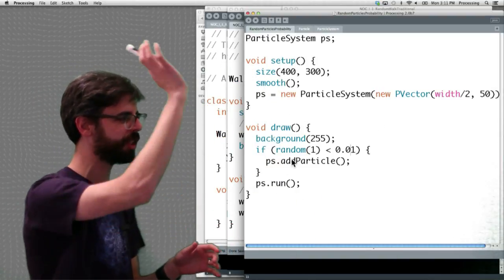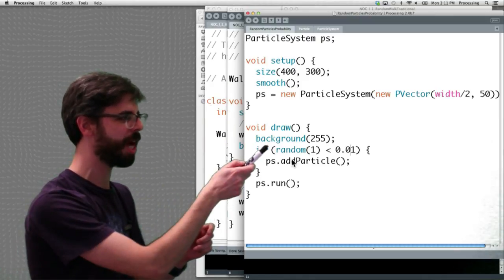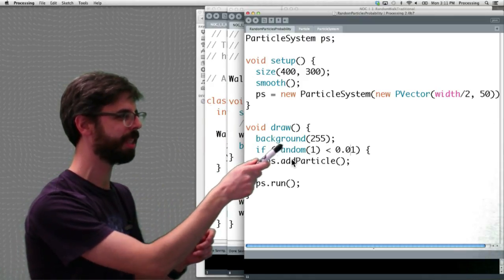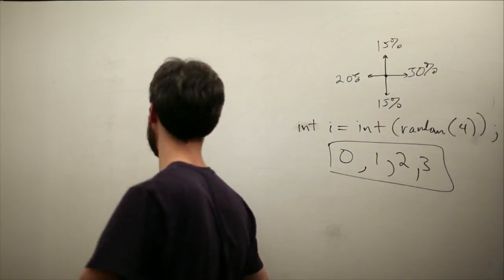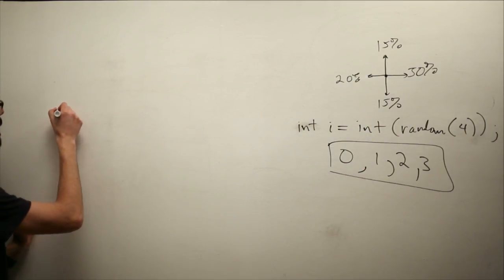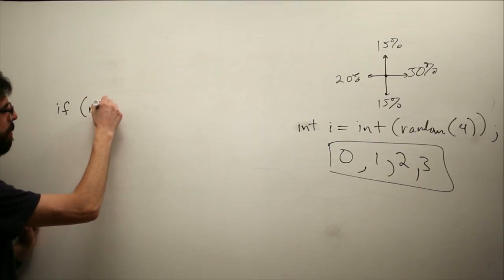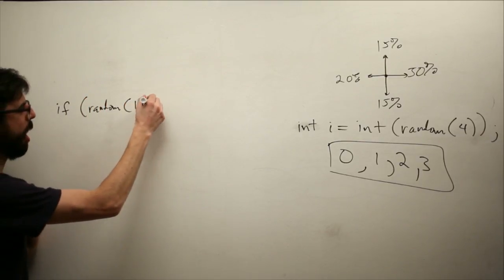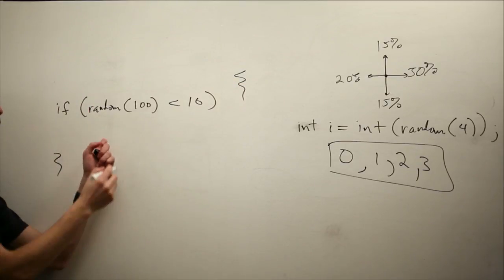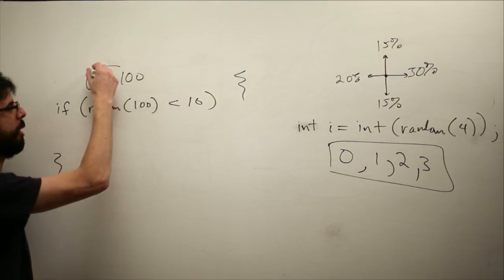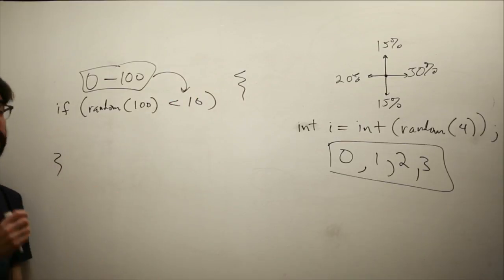Look at this code. Now, we haven't done all this stuff. All this stuff we're going to get later, but we're looking at this line right here. If random 1 is less than 0.01, let's write that a different way. If random 100 is less than 10, here we're picking a random number between 0 and 100. How often will that random number be less than 10? 10% of the time.